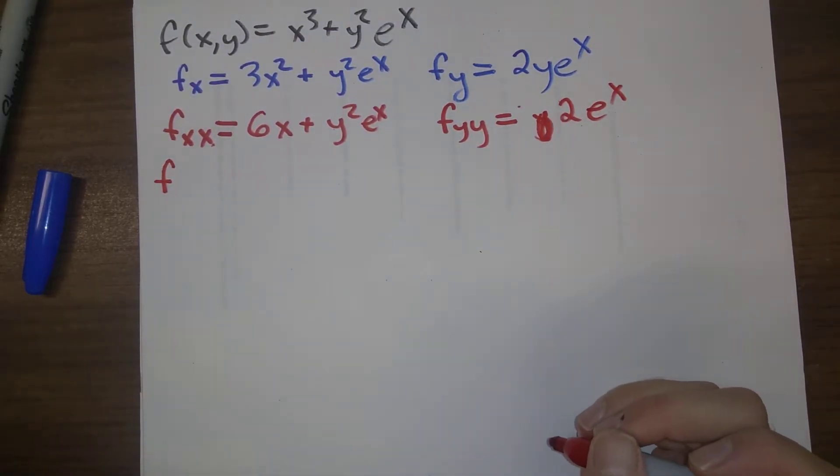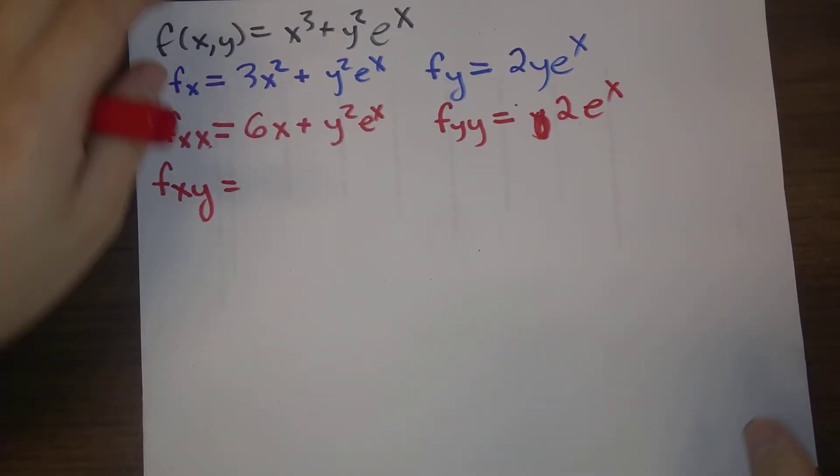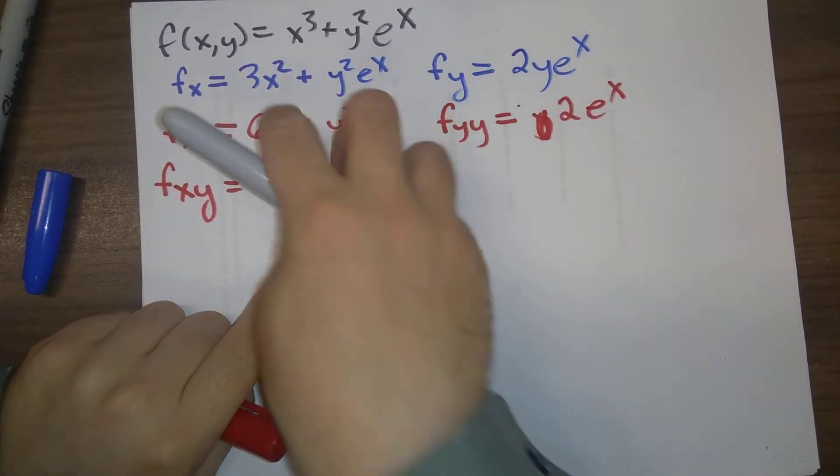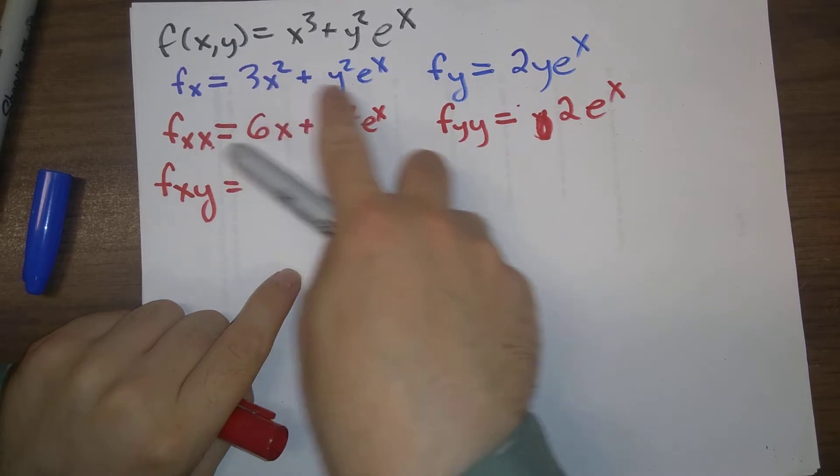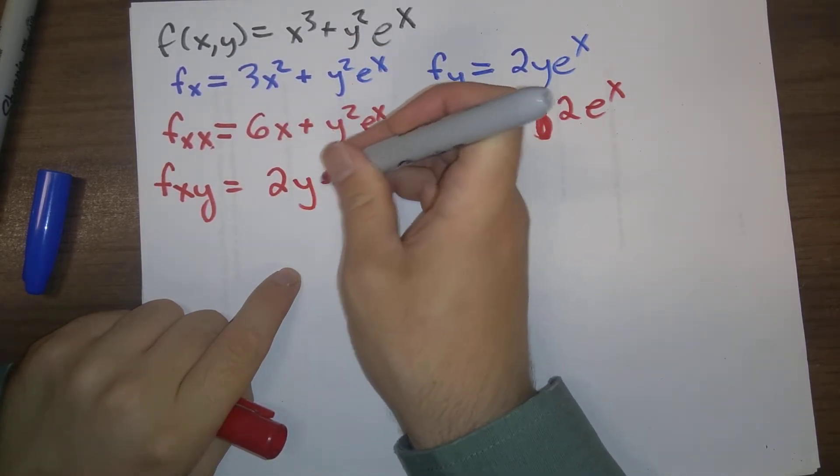So now, for f_xy, we want to take the y derivative of f_x, and so the y derivative, that will be a 0, and the y derivative over here will be 2y e^x.